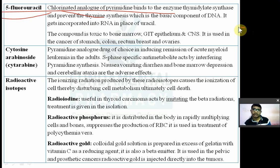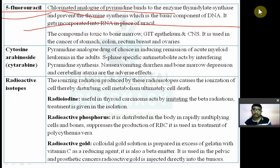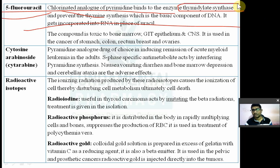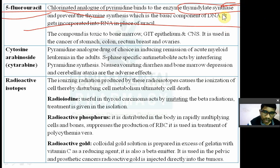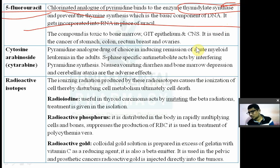It will inhibit the synthesis of thymine by binding to the enzyme thymidylate synthetase. This enzyme synthesizes thymine, so the drug prevents thymine synthesis in the cell. If that base is not available for DNA, nucleotides cannot be formed and the cell will die.